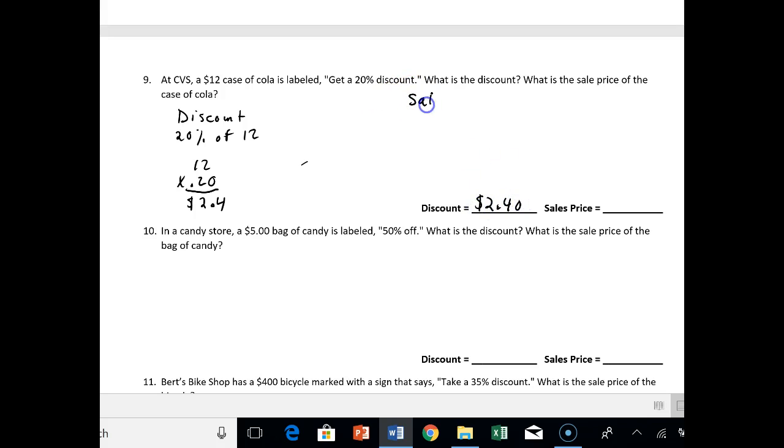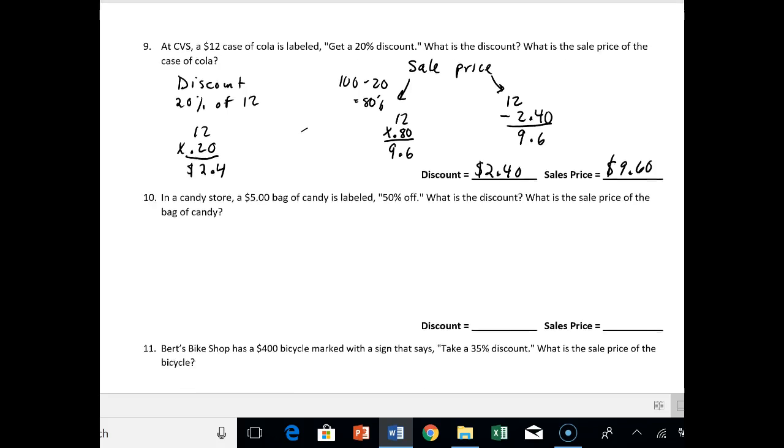And now the sale price again. There's two ways you can do this. One way is to say, I'm not paying 100% of the price. I'm paying 100 minus 20, which is 80% of the price. So I can do 12 times 0.80. Or the second way is to say, I know what the discount is worth. It's worth $2.40, so I can say 12 minus $2.40. Either way, you should still get the same answer. So 12 times 0.80 gives you 9.6, and 12 minus 2.40 also gives you 9.6. So the sale price is $9.60. You should do whatever way is more comfortable for you, but you should be able to do it both ways.